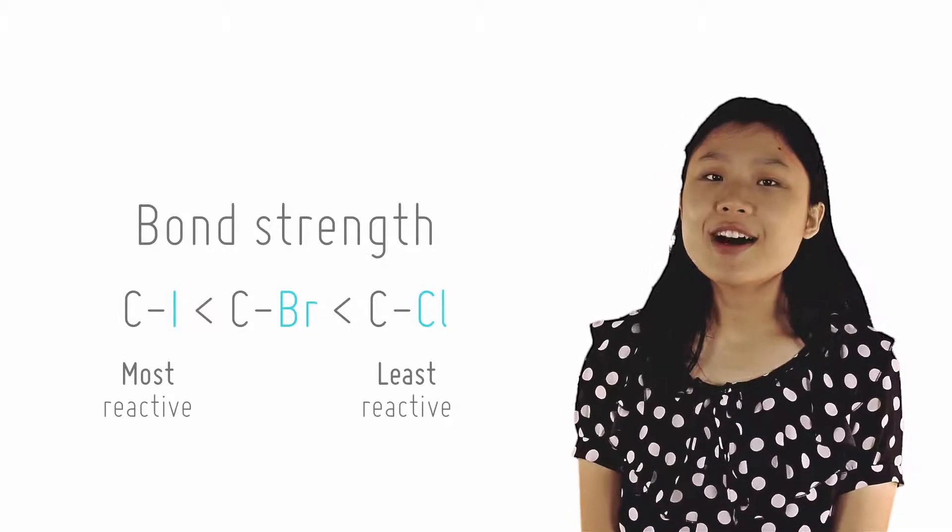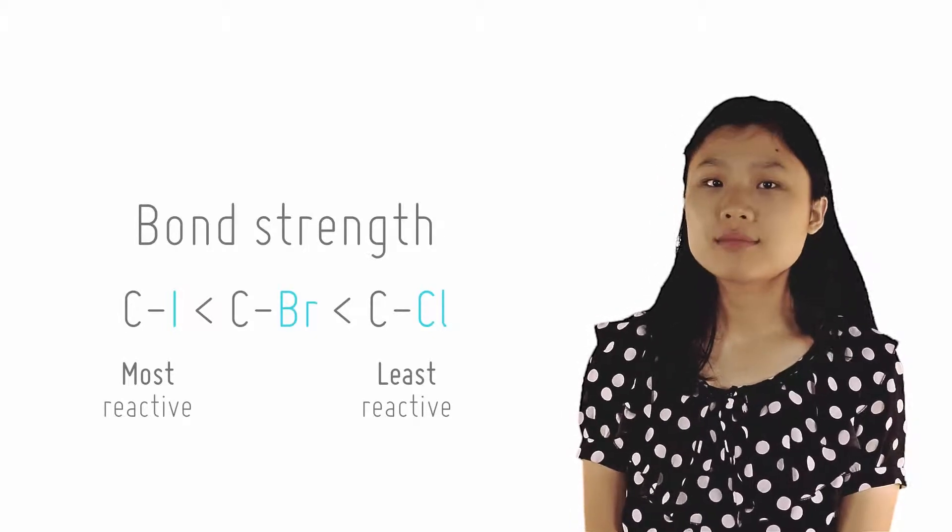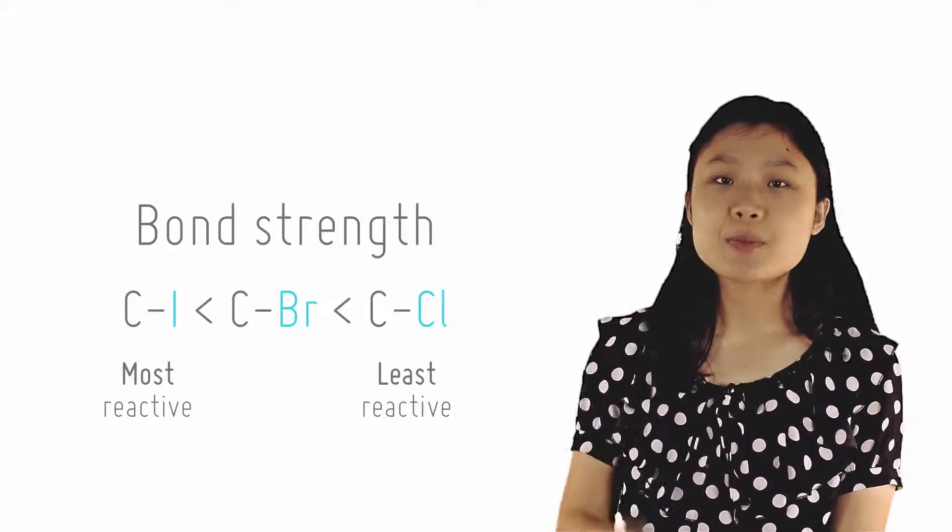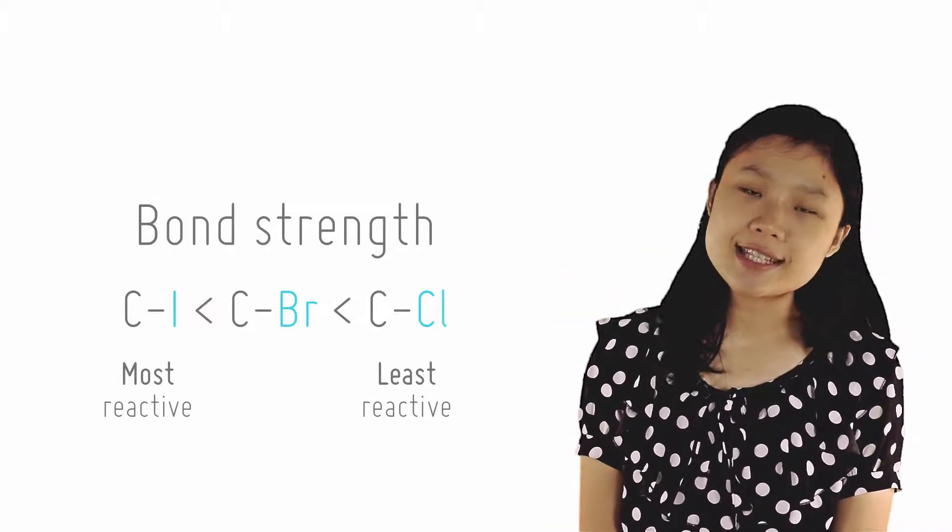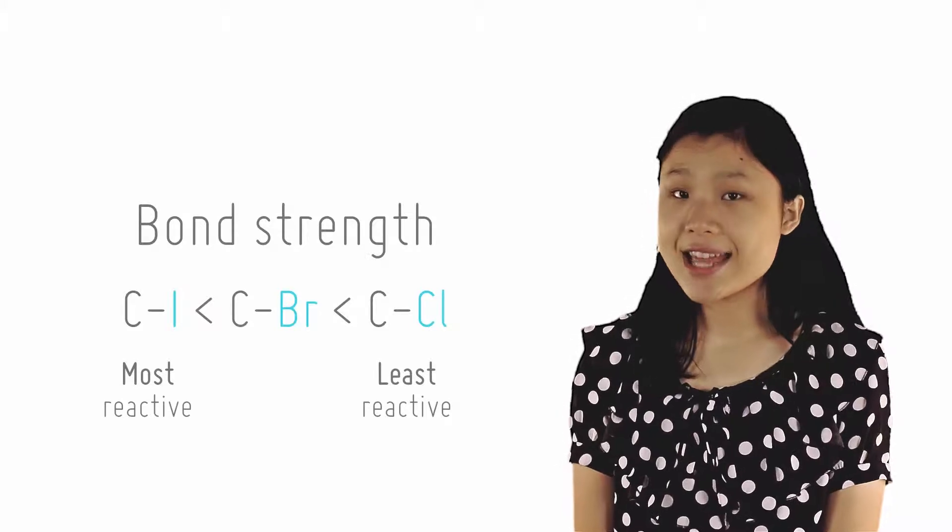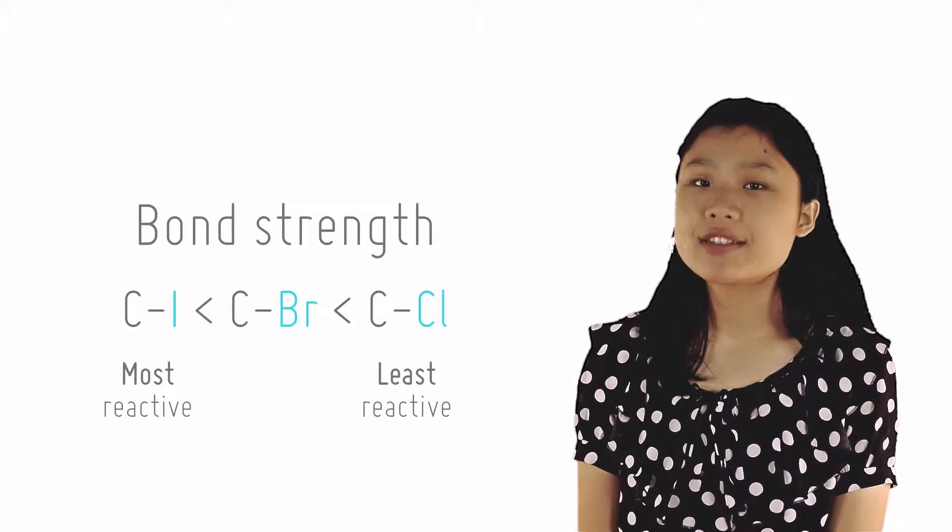There are also some factors that affect how fast the SN2 reactions can occur. Firstly, the CX bond strength plays a part, just like the SN1 reactions. A weaker bond requires less energy to break, so the reaction occurs faster.